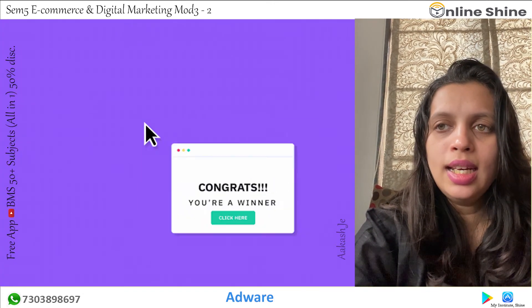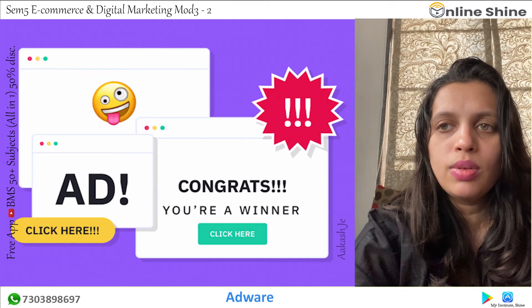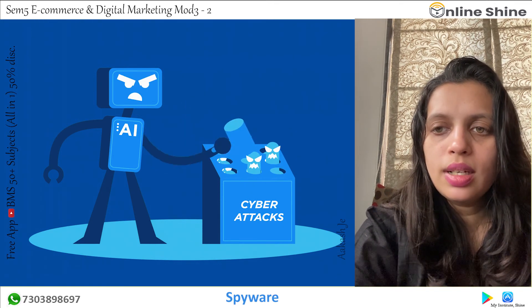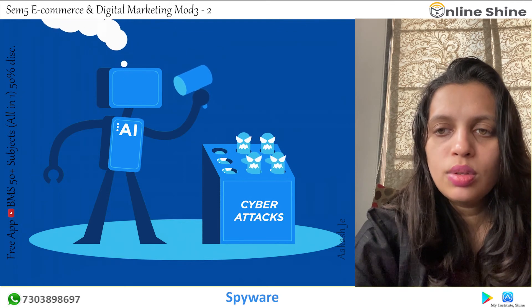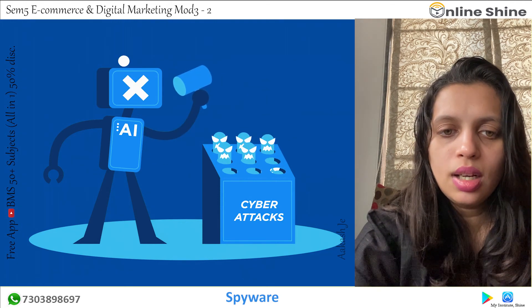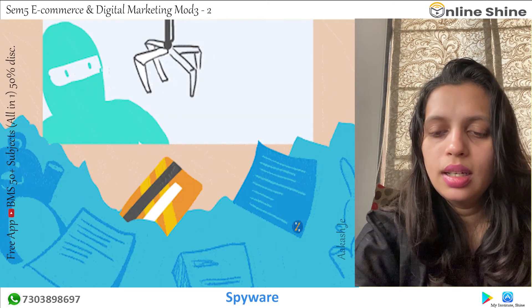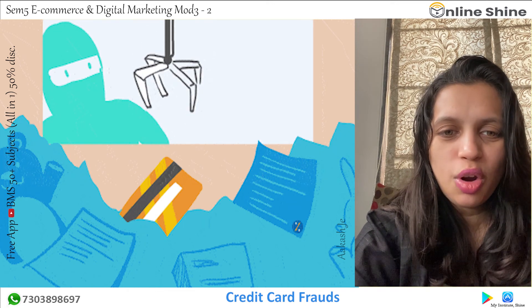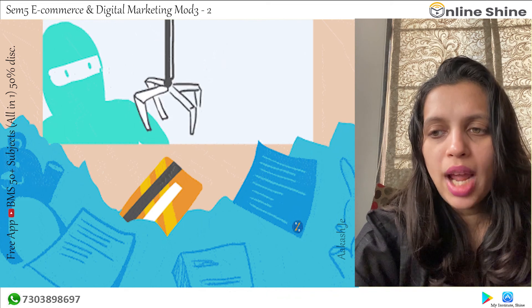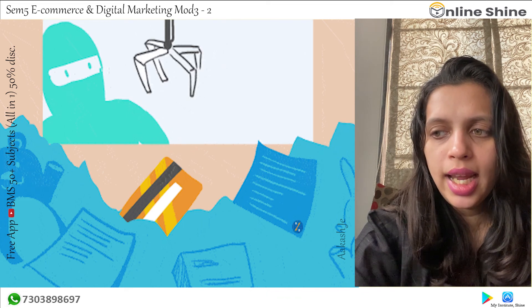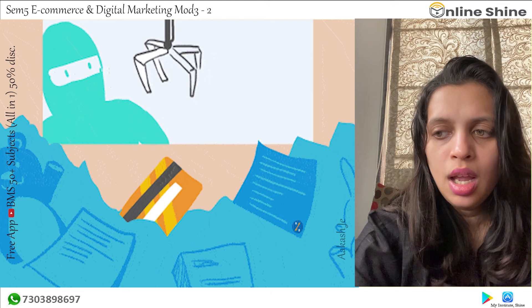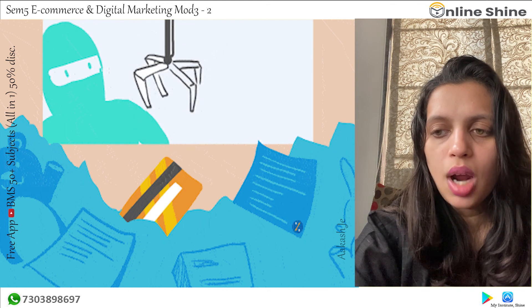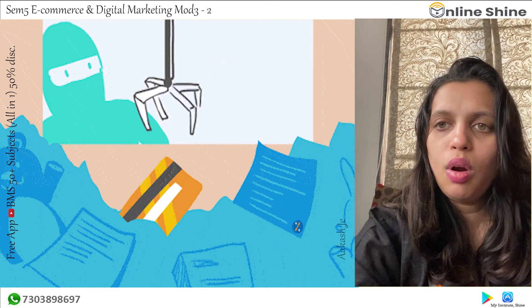Adware refers to any software designed to track the user's browsing habits based on advertisements and popups. Spyware works similarly to adware but operates on the user's computer without their knowledge or authorization — if the user has no knowledge, they cannot authorize it. Credit card fraud is very common nowadays and is the most common type of fraud on the internet. Hackers gain access to a user's credit card information through various means such as e-commerce websites, and then use the information for online purchases.